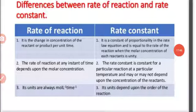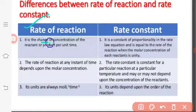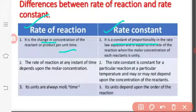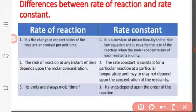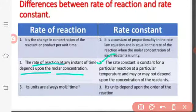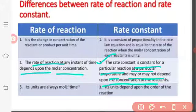What is the difference between rate of reaction and rate constant? The rate of reaction is the rate of change in concentration of reactant or product per unit time. The rate constant is a constant of proportionality in the rate law equation, and it is equal to the rate of reaction when one molar concentration of each reactant is taken as unity. The rate of reaction at any instant depends on the molar concentration, while the rate constant is constant for a particular reaction at a particular temperature.